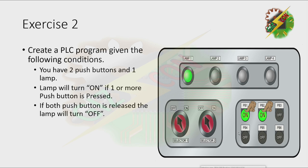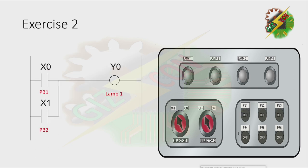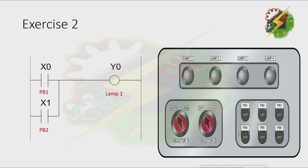Okay, let's continue. This is the answer for this exercise. When I press PB1, lamp 1 will turn on. When I release PB1, lamp 1 will turn off. When I press PB2, lamp 1 will turn on. When I release PB2, lamp 1 will turn off. And when I press both push buttons, lamp 1 will turn on. And that's how we solve this problem.